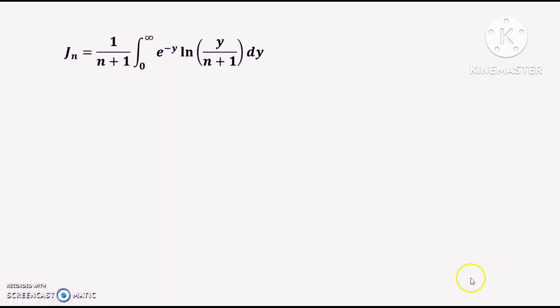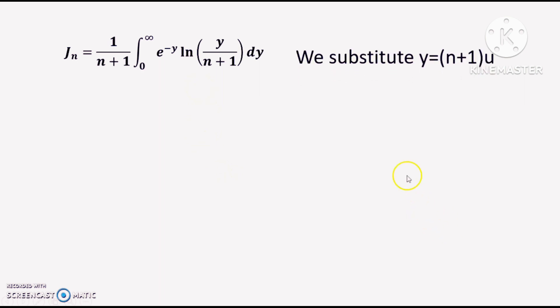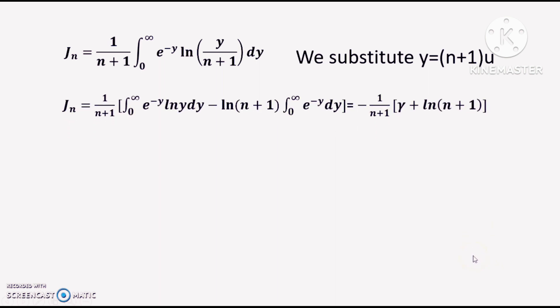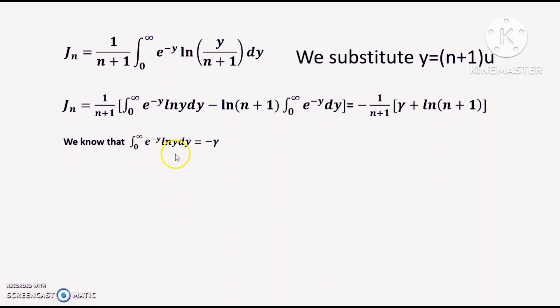So J_n = ∫₀^∞ e^(-(n+1)u) u du. Making the further substitution y = (n+1)u, we get J_n = 1/(n+1)² ∫₀^∞ e^(-y) ln y dy = -γ/(n+1)², where γ is the Euler-Mascheroni constant, since ∫₀^∞ e^(-y) ln y dy = -γ.